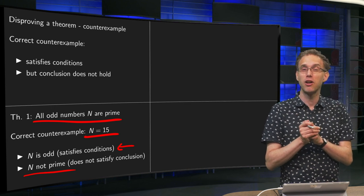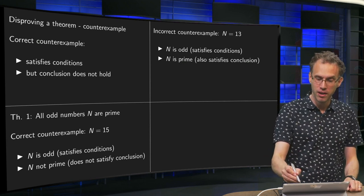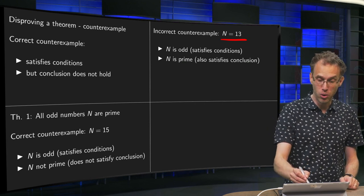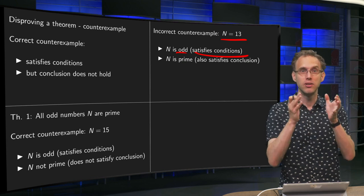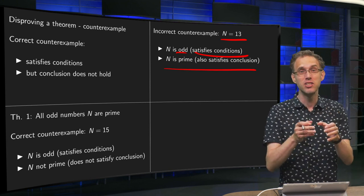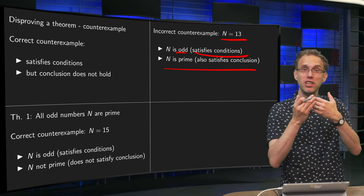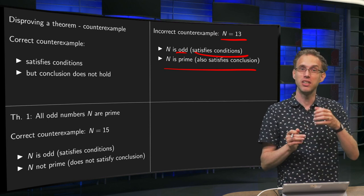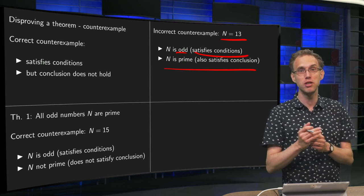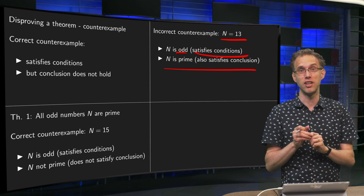Now let's look at what can go wrong if you are trying to give a counterexample. Let's take a look at an incorrect counterexample — for example, n equals 13. Why is this not a correct counterexample? Well, n is odd, so it satisfies the conditions — that part is correct. However, n is also prime, so this n also satisfies the conclusion of the theorem. This number satisfies both the conditions and the conclusion, so this example does not disprove the theorem. It neither proves nor disproves the theorem, which is why it is not a correct counterexample.